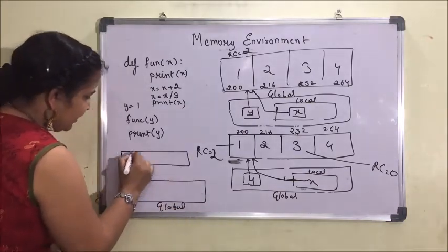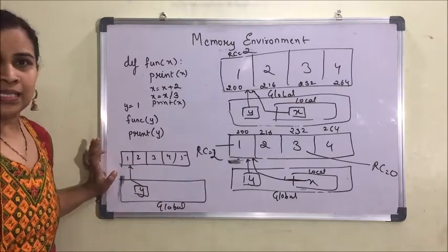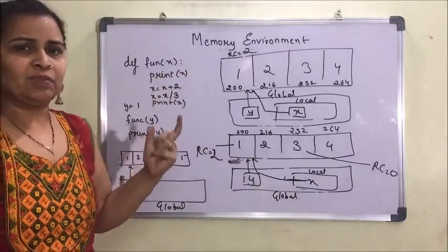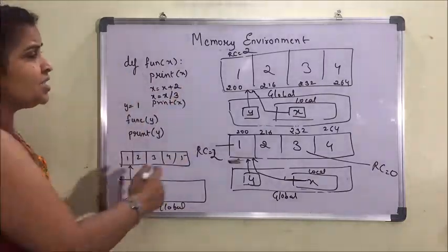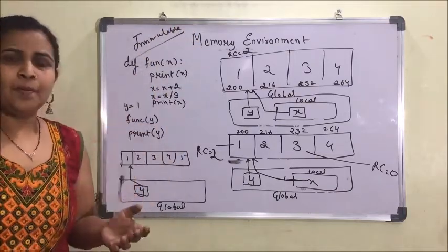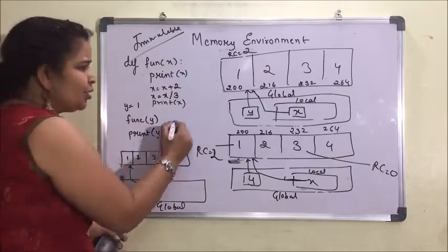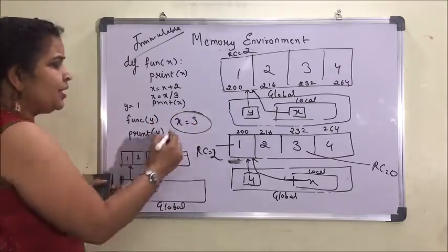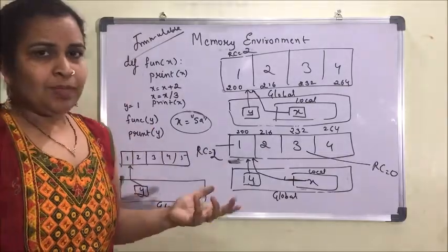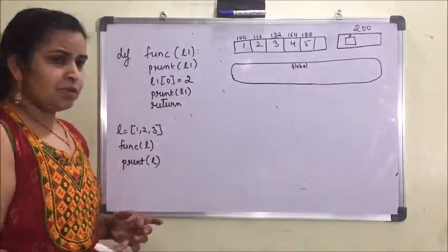The last step shows the global environment with data 1, 2, 3, 4 and y pointing to 1. This is the memory environment you have to draw when asked. Now, this example was for immutable data types — immutable means the value cannot be changed, like strings or integers. If x equals 3, it will remain 3; we can only override it. Mutable means types like list or dictionary where we can change the value in place.